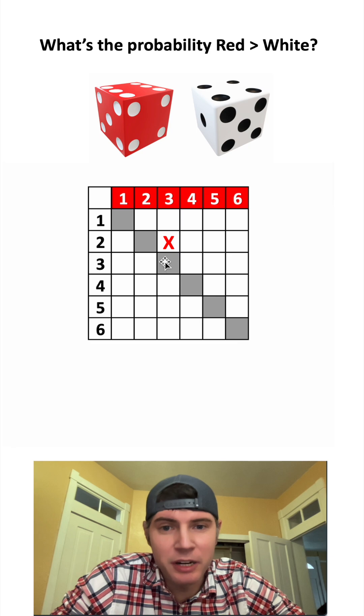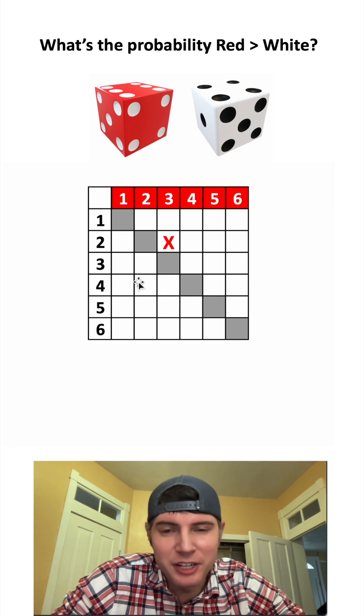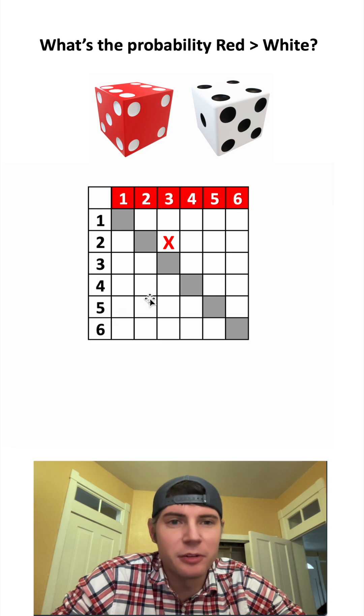Along this diagonal, the red one and the white one have the exact same numbers, so none of these are going to work. And then for all these below the diagonal, the white one is going to be greater than the red one, so we can block all those out as well.